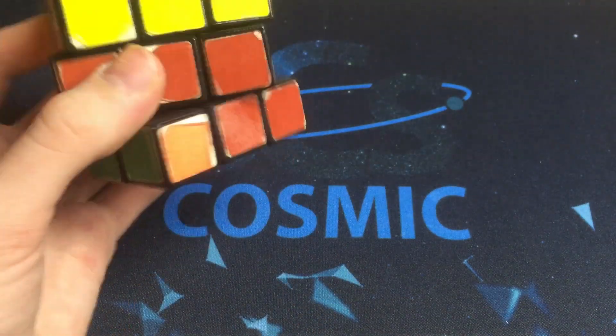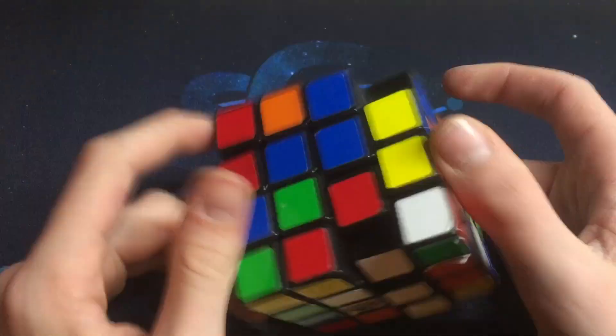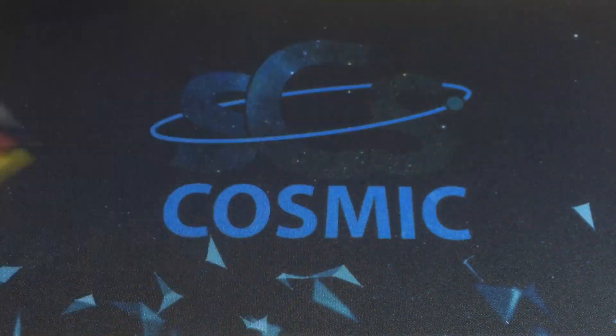This is a 1980s 3x3. This has the original colour scheme as well. This is a Rubik's 4x4. It's broken. These are the rest of my puzzles.